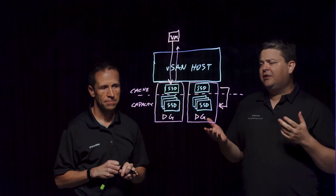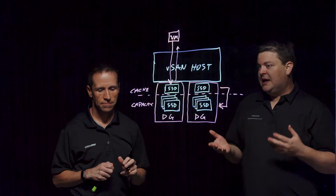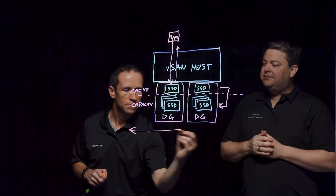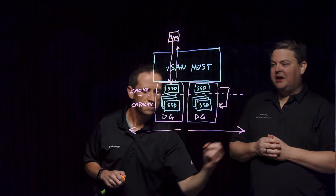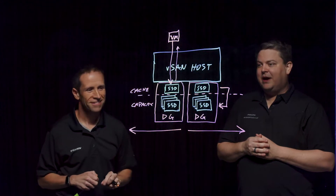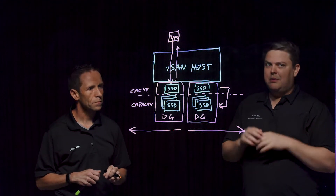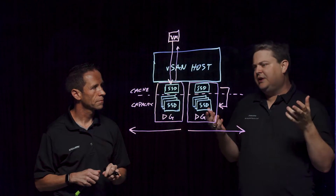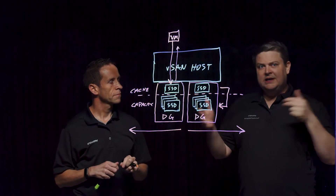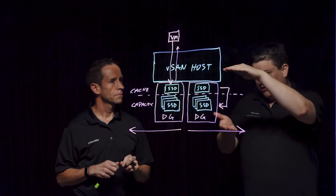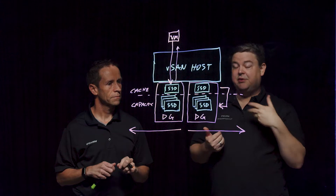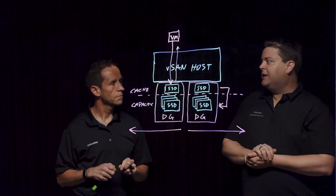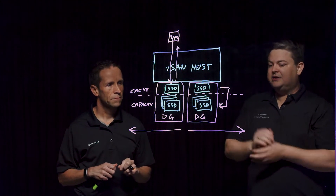You start with at least one disk group in a host, and you can add up to five. This is going to depend on how many drive bays you have. If you've got a 1U server with eight drive bays, you might have two disk groups. If you've got 24, since there's a total of eight devices per disk group, you might have three disk groups in that host, or more, depending on the amount of performance you're trying to add.